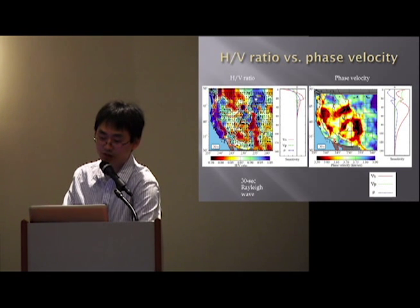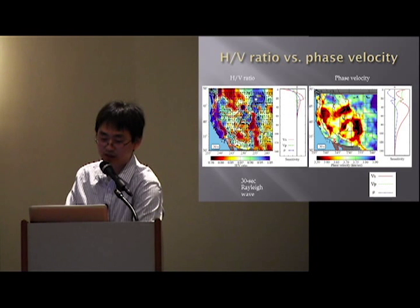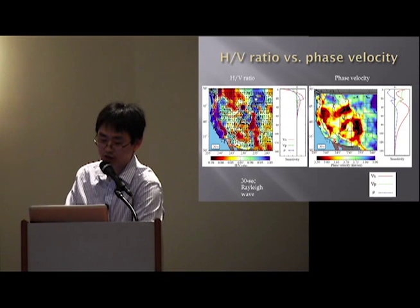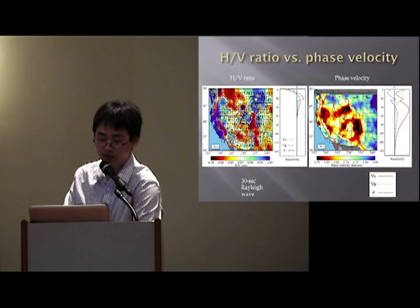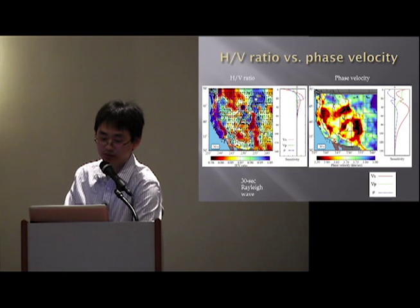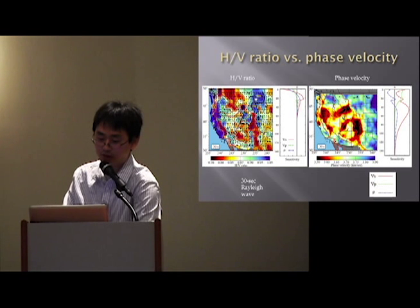We can do this for all different stations and all different earthquakes. Here shows the 30-second ellipticity (H/V ratio) map compared with the 30-second phase velocity map, along with their sensitivity kernels. You can see that the H/V ratio has particular sensitivity to shallow structures. There are three types of sensitivity: red is for Vs, green is for Vp, and blue is for density. So phase velocity and H/V ratio not only have different depth sensitivity but also very different sensitivity to these three parameters. In principle, including both measurements will potentially allow us to resolve density structures.